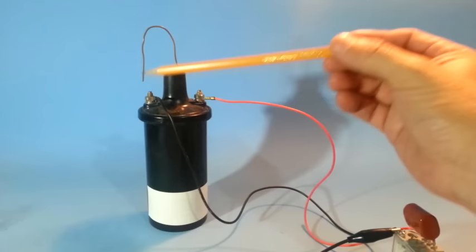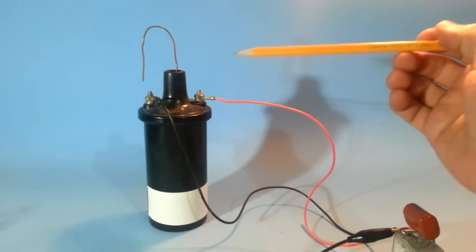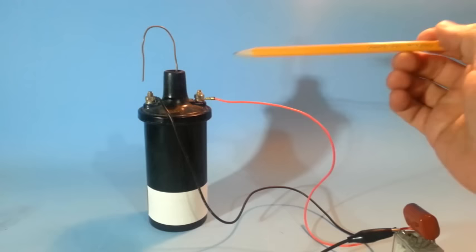For example, having AC allows us to use a voltage multiplier. And this is also useful if we want to make a plasma ball. Something that we will make in another video.